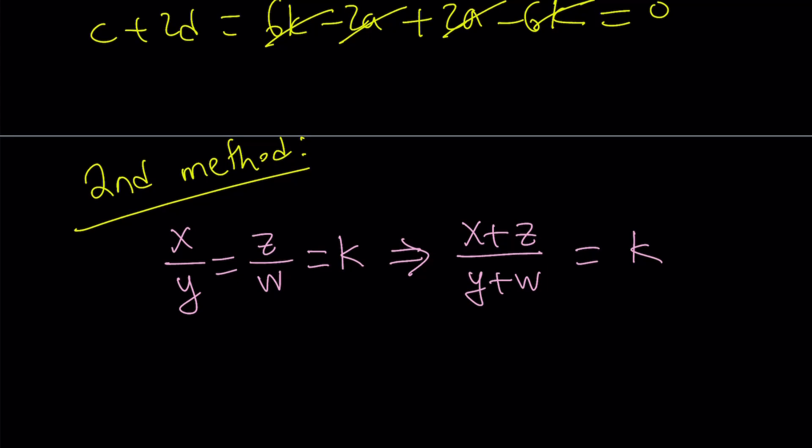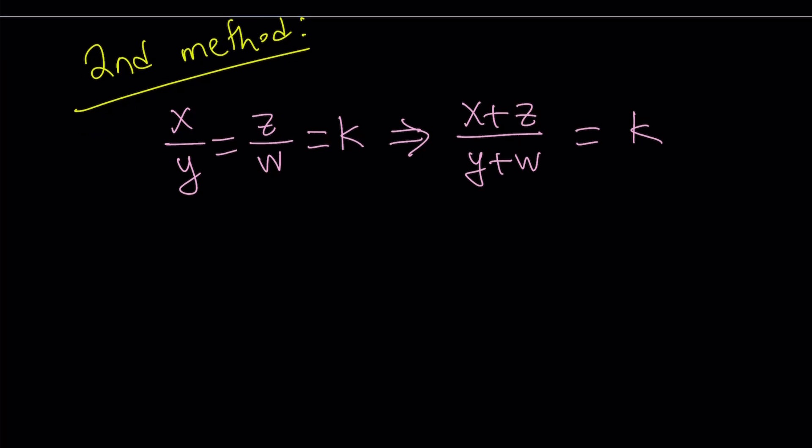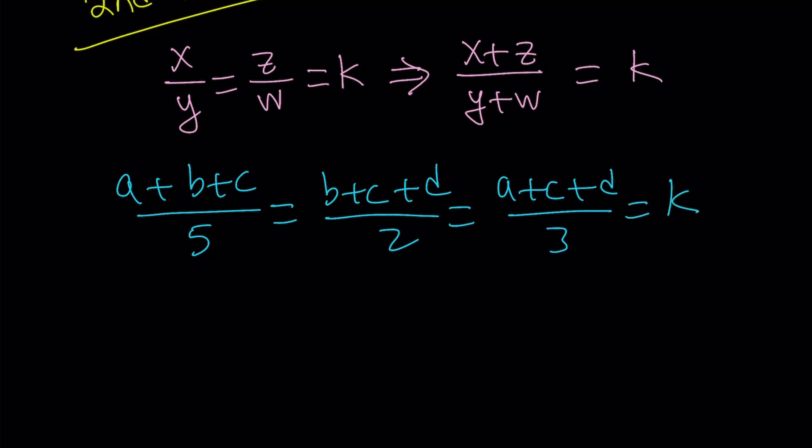So how do we apply it to our situation? Let's go ahead and see how we can use it to our advantage, because this is a really cool shortcut, and you'll be amazed how many times we use it and how much time we save. Let's rewrite our ratios. A plus b plus c over 5 equals b plus c plus d over 2, and that equals a plus c plus d over 3. Again, I'm going to set the whole thing equal to k.